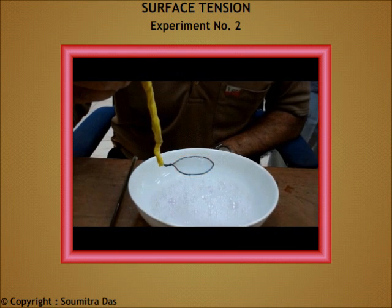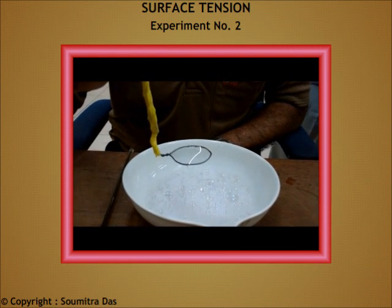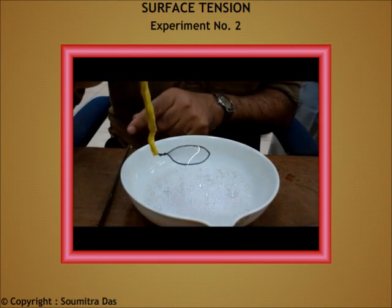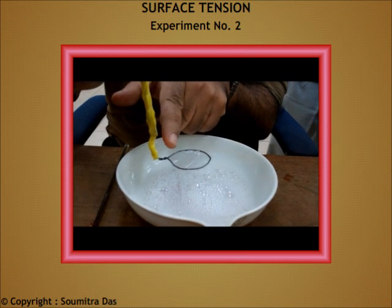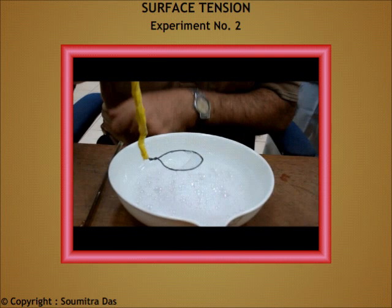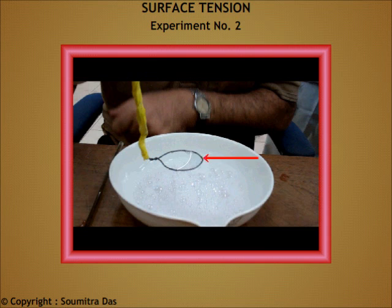At this stage, the thread is loose as before. Now I break the film of lather on one side of the thread. The thread becomes taut and forms a curve like this. We can conclude that the surface of a liquid behaves as a stretched membrane and the tension acts tangentially on its surface.